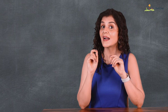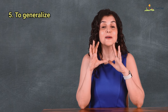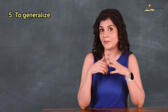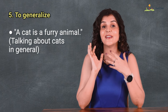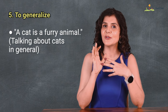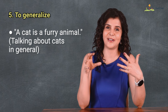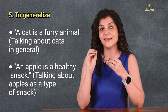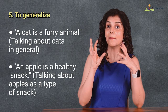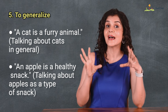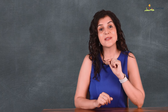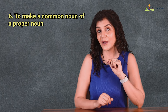We can use a and an with a singular countable noun to generalize in a broad or non-specific sense. For example: a cat is a furry animal — we're talking about cats in general. An apple is a healthy snack — here we're talking about apples as a type of snack.